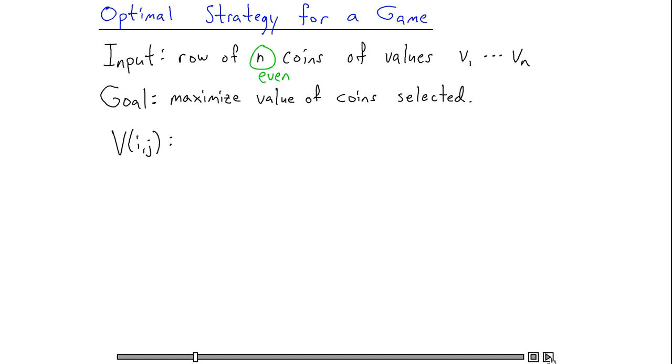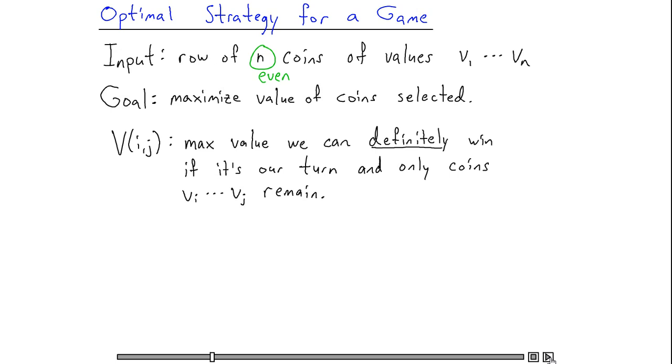As our dynamic programming subproblems, we'll choose exactly what I just said. Let's let V(i,j) denote the maximum possible value that we can definitely win, the maximum value we can guarantee winning, if only the subrange from coin i to coin j currently remains, and it's our turn to move.